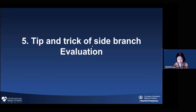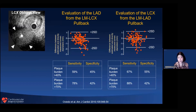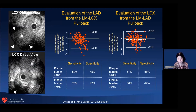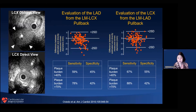Regarding side branch evaluation: in this case we were imaging in the LAD and looking at the circumflex ostium. It looked okay and appeared clean. However, it was not clean—when we pulled back into the circumflex directly, we saw a significant chunk of disease. The key point is that evaluating the side branch from the main branch has very poor specificity. Meaning, if you don't see any lesion from the main branch, that does not mean there is no lesion. You must check the circumflex directly. However, if you do see something from the main branch, it is most likely true disease.